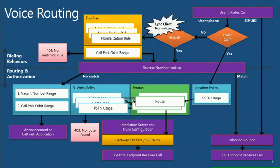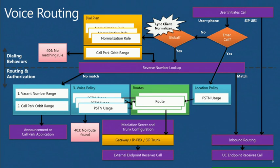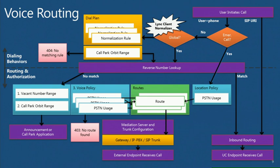Whenever we initiate a call and type in a number, we first check: is this an emergency call? Did I dial 112 or 911? If not, we check if it's a global number — meaning an E164 number. How do we check? It starts with a plus. If your number starts with plus, we consider you intelligent enough to have typed the correct number and route it straight to the gateway. If it's not a global number — say I typed a Dutch number — we normalize it using our normalization rules to make it a global number.